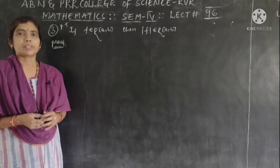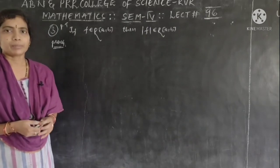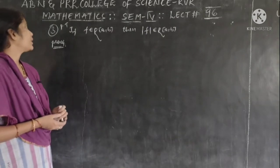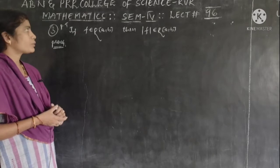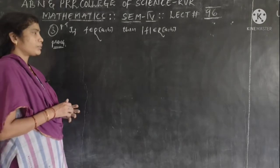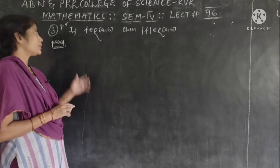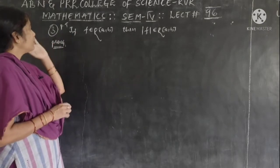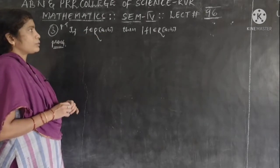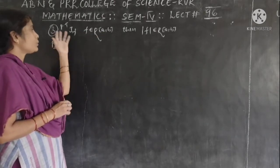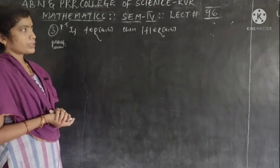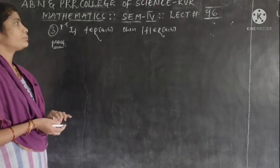Good morning students. Welcome to ABN NPRR College online classes. Today we will discuss one more application of the necessary and sufficient condition for Riemann integrability. That is: if F is a Riemann integrable function on closed [a, b], then prove that mod F is also a Riemann integrable function on closed [a, b].